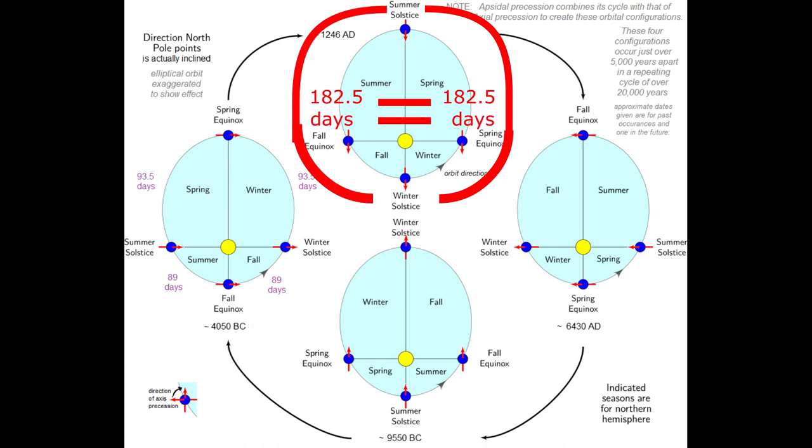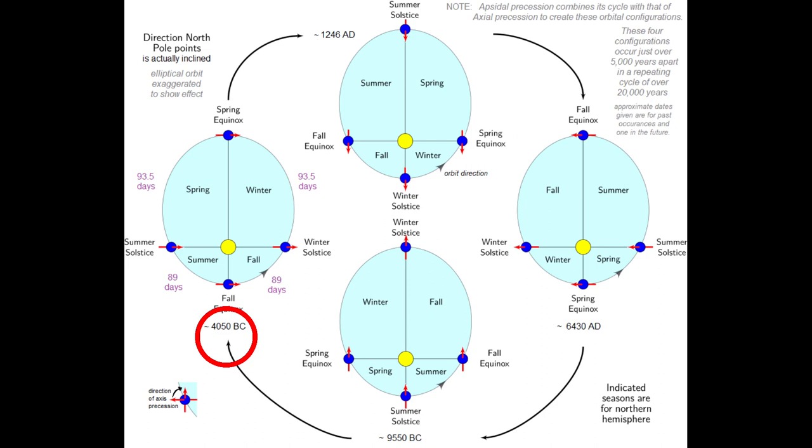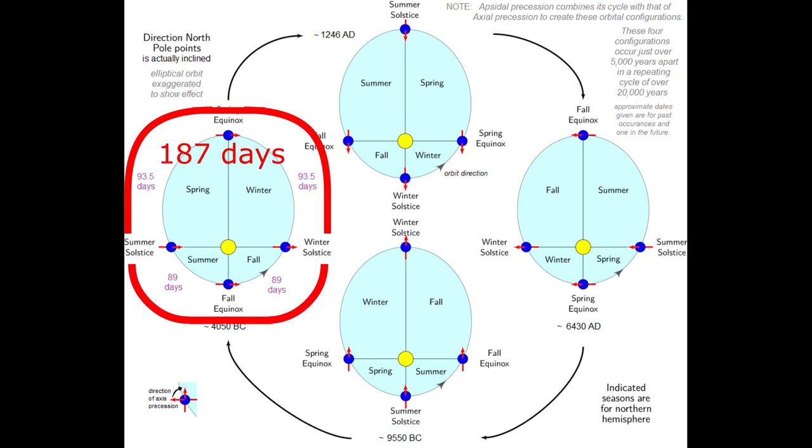Over 5,000 years earlier, around 4,000 BC, the orientation produced the maximum discrepancy with 187 days from winter to summer solstice, and only 178 days from summer back to winter, as the Sun moved faster over that interval. This produces a difference of 9 days that was likely detectable when counting from even a roughly determined solstice to the other when attempting to count the days to divide the year.